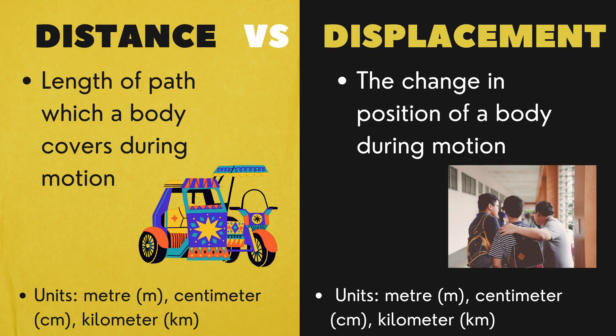Example of distance is the length of path in which a tricycle covers when you go to school. Displacement is the overall change in the position of the object from start to finish. It concerns only the initial and final position of the object. Example, from your house to school.